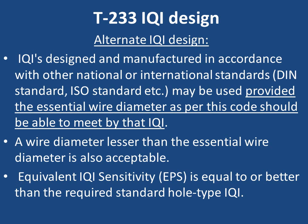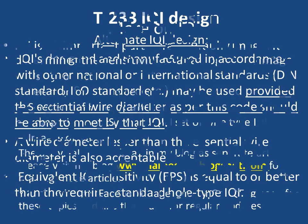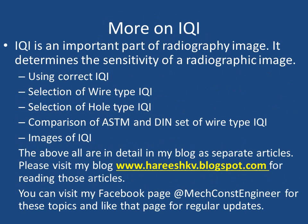Equivalent IQI Sensitivity (EPS) shall be equal to or better than the required standard hole type IQI. IQI is an important part of the radiographic image — it determines the sensitivity of a radiographic image. Details on using correct IQI, selection of wire type and hole type IQI, and comparison of ASTM and DIN wire type IQI sets are available as separate articles on the blog at www.harishkv.blogspot.com.